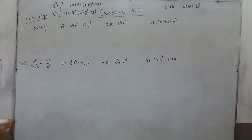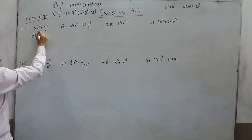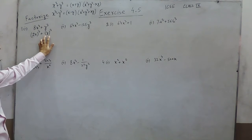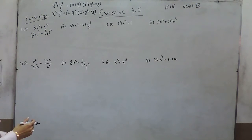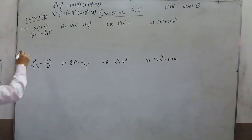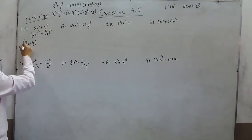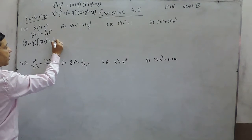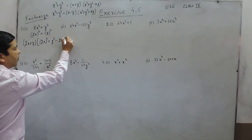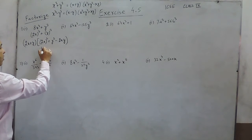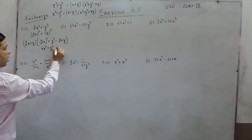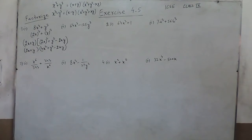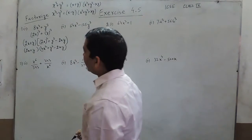As the first question is 8x³ plus y³, I can write it as (2x)³ plus y³. Because (2x) can be taken as the first term and y as the second term, and there is a positive sign in between, we apply the first identity. The answer will be (2x + y) as the first factor, while (4x² + y² − 2xy) will be the second factor.